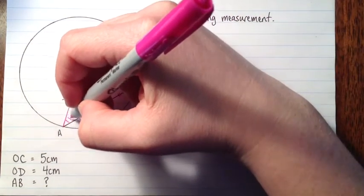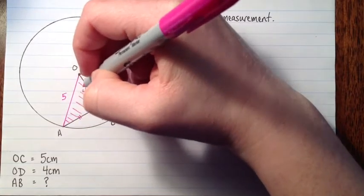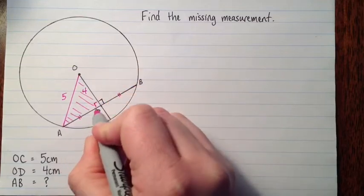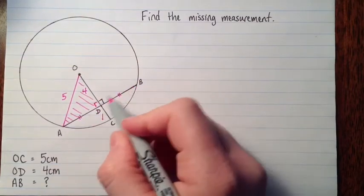Okay, and now we've got a right triangle. We know two of the lengths of two of the sides, so we can just use Pythagorean theorem on that triangle. And we can find A to D. Once we do that, we'll double it to get AB.